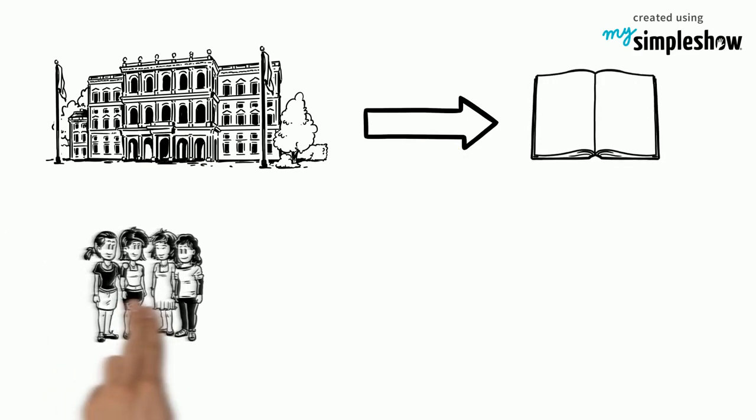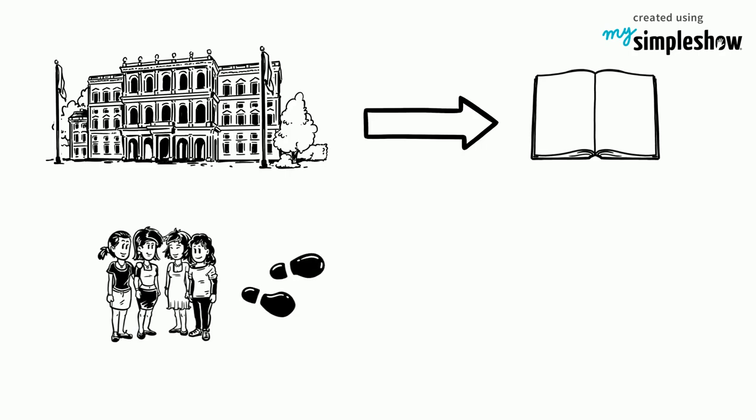Next, the government should provide free education in all public schools till the 12th grade, so that girls like Mila can also go to school with their brothers.